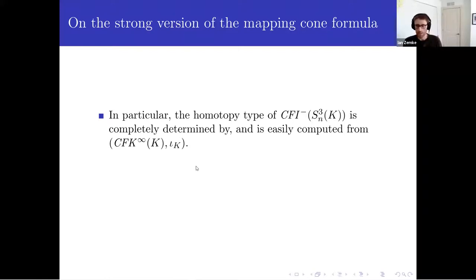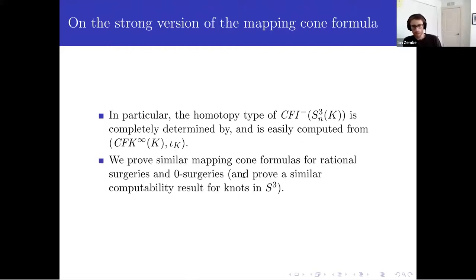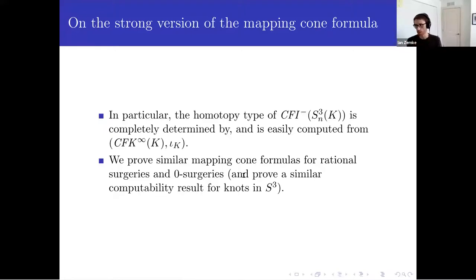The mapping cone is completely determined by the knot involution, and it is relatively easily computed from just the knot involution. We also proved the rational surgeries version and zero surgeries version, which are things that Ozsváth and Szabó proved for the ordinary mapping cone formula — we proved them here as well.